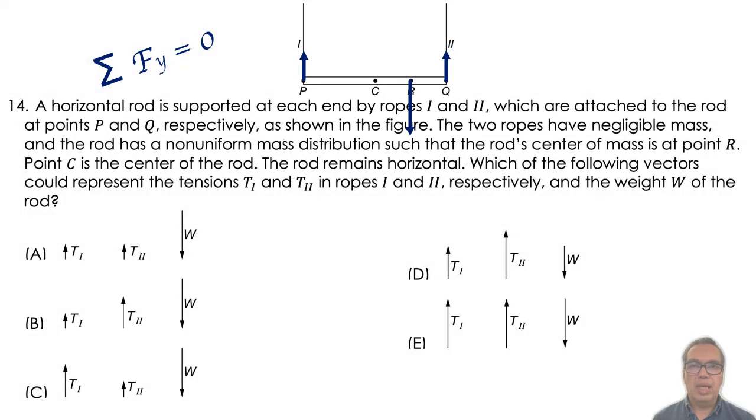So that likely options cannot include A, where there is a net downward force, nor D, where there is a net upward force, nor E, for the same reason.